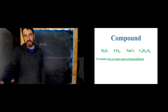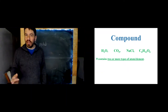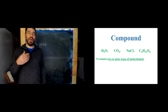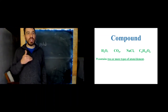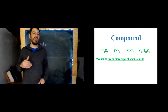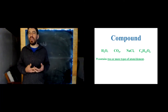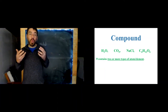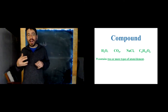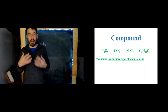Compounds are when different types of atoms are chemically bonded together, whereas a mixture is when substances are physically mixed together. Water, H2O, is a compound — hydrogen and oxygen are chemically bonded together with covalent bonds. Water has properties that are all its own. It's not a mixture of hydrogen and oxygen; water is its own unique substance. A compound is not a mixture of atoms — it is different types of atoms chemically bonded together.